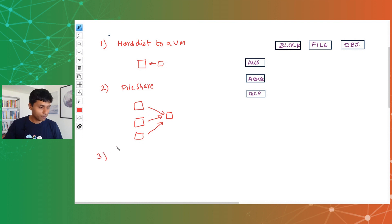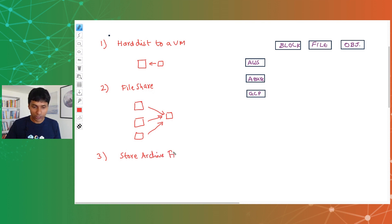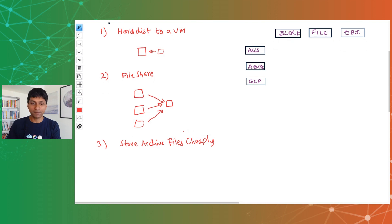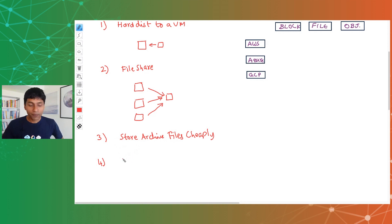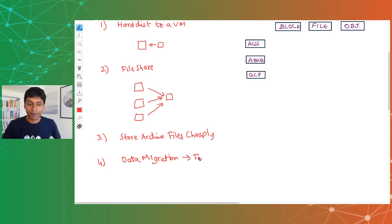The third use case might be to create some kind of archive files — for example, storing a lot of zip files very cheaply. I would want to pay as little as possible and store files for archive purposes. These files might not be needed regularly, but are stored for regulatory reasons, or in case something goes wrong you can unzip and use the data. You might also be doing a file data migration from your data center to the cloud and would want a temporary store for everything you are migrating.